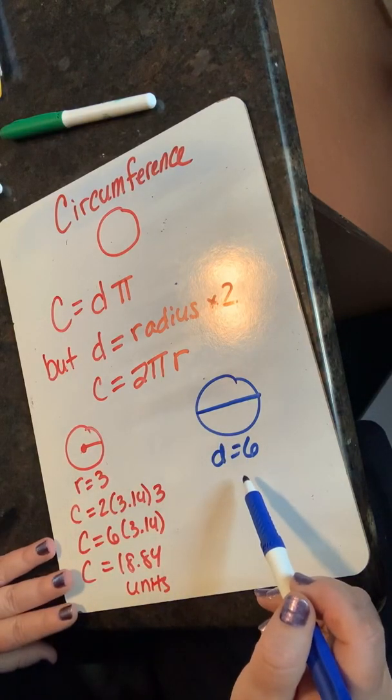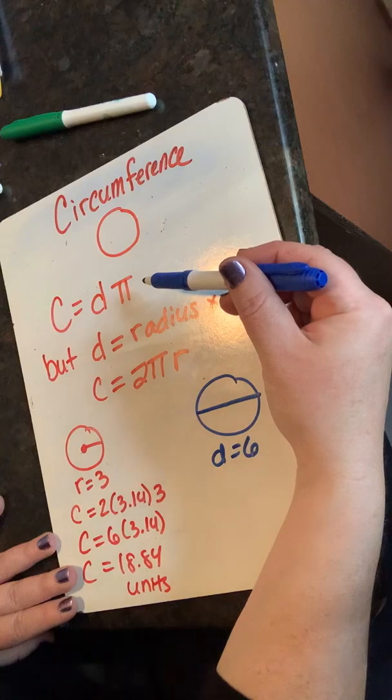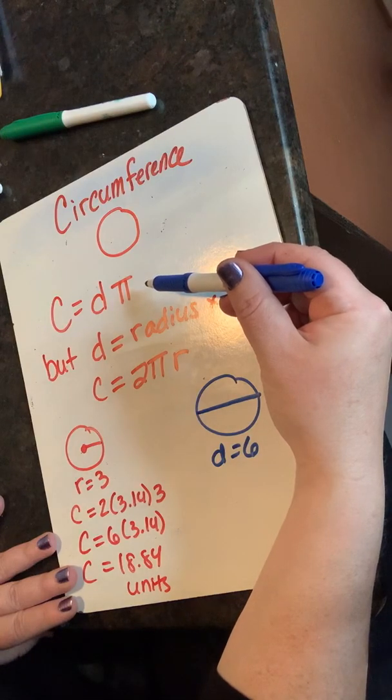Since I'm using diameter, I'm going to use the circumference equation circumference equals diameter times pi.